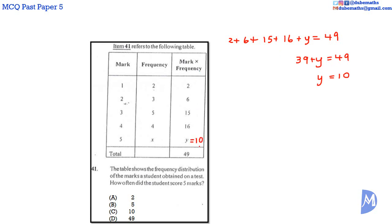If mark multiplied by frequency is equal to 10, and we know that mark is equal to 5, then the frequency must be equal to 2. Because 5 multiplied by 2 is equal to 10.